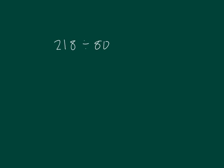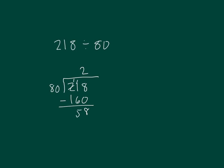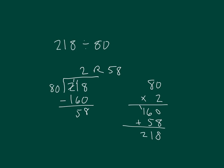Here we have 218 divided by 80. Set up the problem. 80 cannot go into 2, cannot go into 21, but it can go into 218. It goes into 218 two whole times, because 2 times 80 is 160, and 218 minus 160 is 58. Our remainder is 58. Remember, our remainder should be less than our divisor. Here's our check: take 80, multiply it by 2 to get 160, and add back in the 58, giving us 218 — which is what we were dividing originally. So the problem checks.